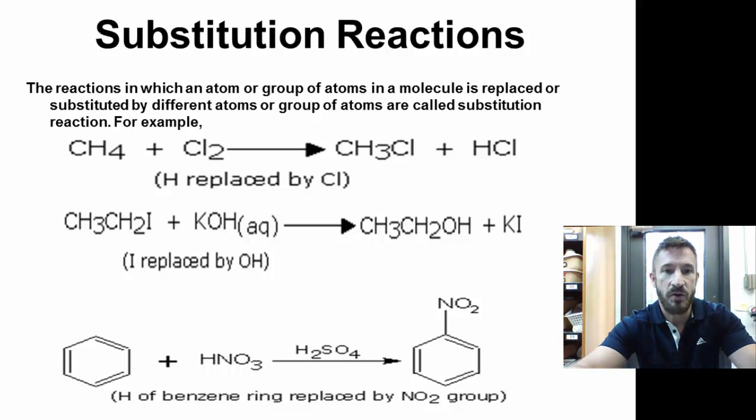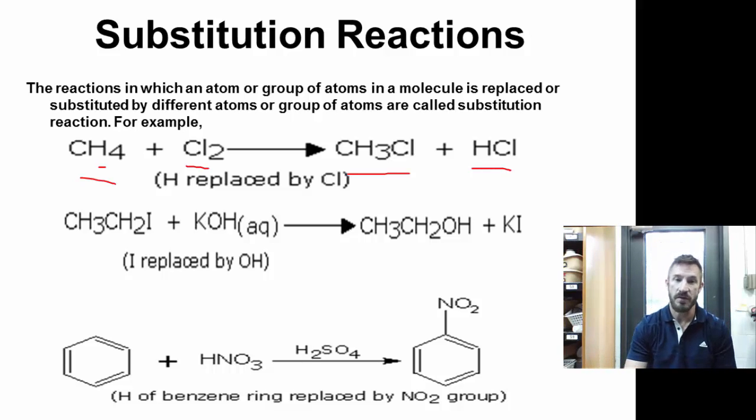If you look at the first example, we have methane and chlorine. The chlorine, one of the chlorines actually goes in and takes the place of one of the hydrogens. So, at the end, we have CH3Cl, and then HCl is the other product. Hydrogen is replaced by chlorine.